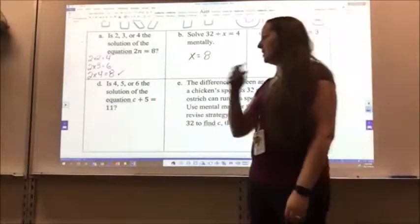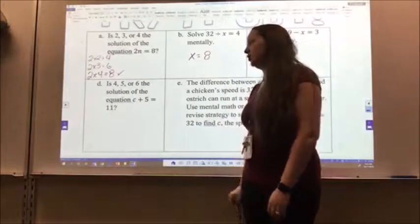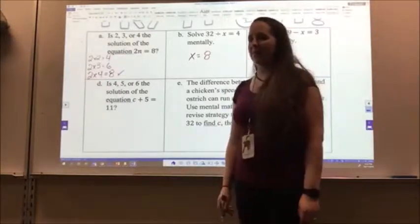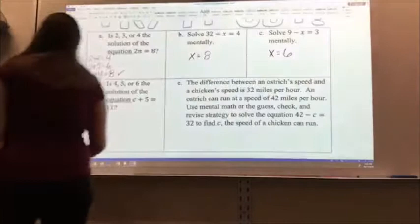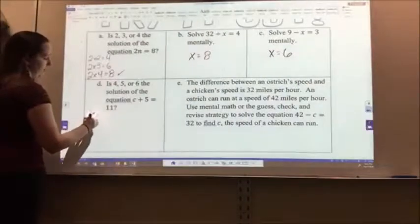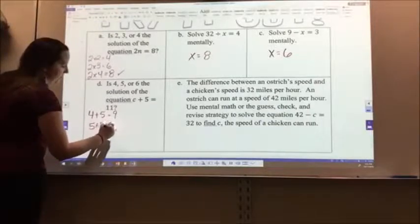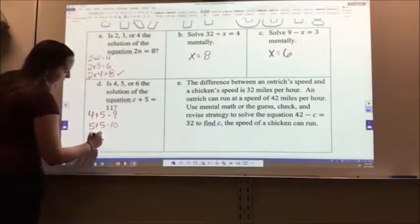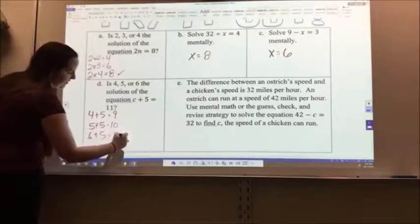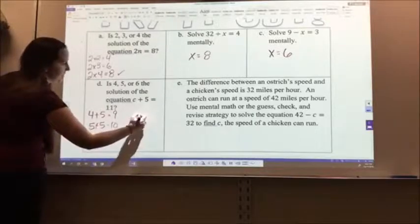Letter D is 4, 5, or 6. The solution of the equation C plus 5 equals 11. So I'm going to go and check through. 4 plus 5 equals 9. 5 plus 5 equals 10. 6 plus 5 equals 11. So that means my solution has to be 6.